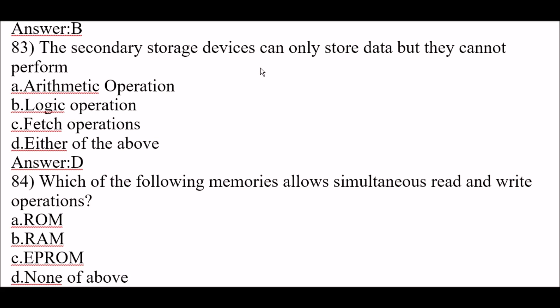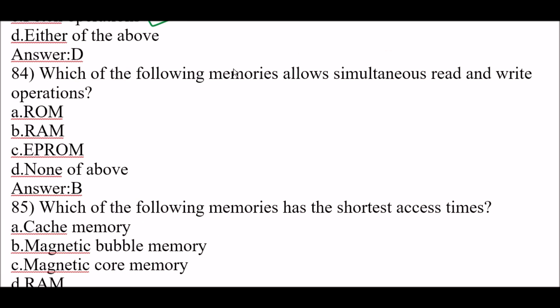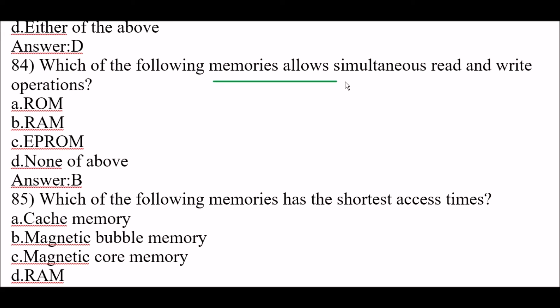Next question: secondary storage devices can only store data but cannot perform fetch operations. Next question: which memories allow simultaneous read and write operations? Option B, RAM. RAM allows simultaneous read and write operations. Next question: which of the following memories has the shortest access time? Cache memory has the shortest access time.